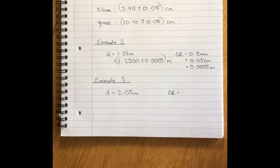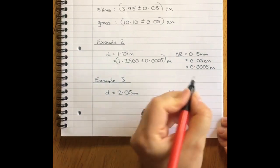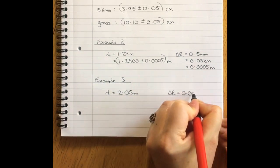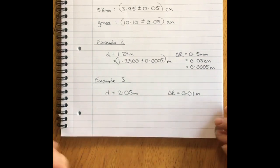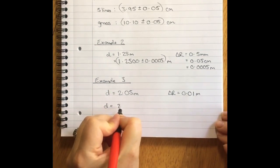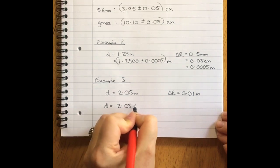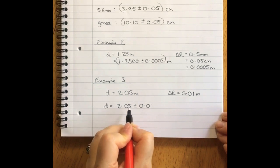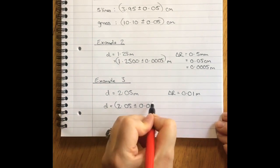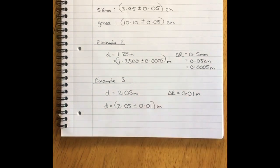So let's say our reading uncertainty is now a centimeter. So that's zero meters, zero tens, one centimeter. So d equals 2.05 plus or minus 0.01 meters.